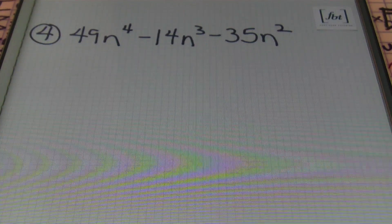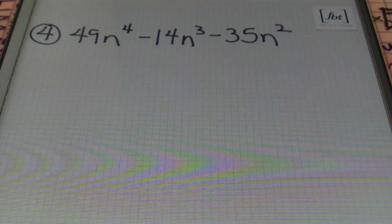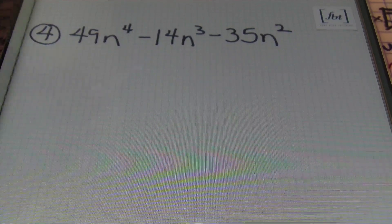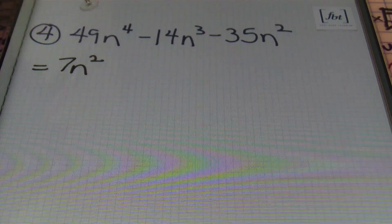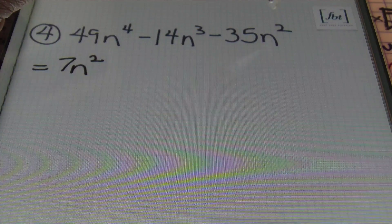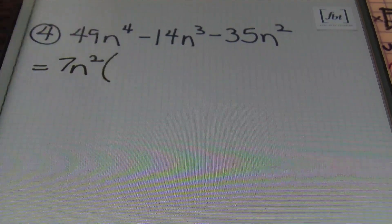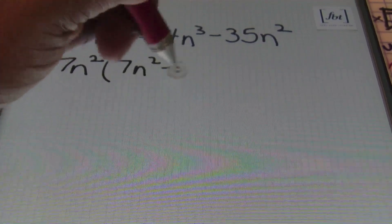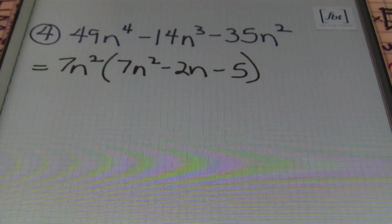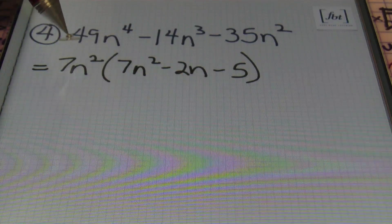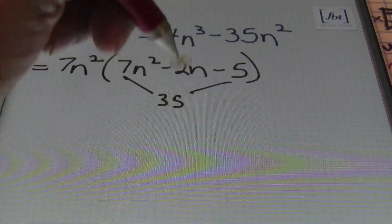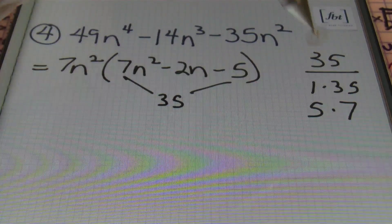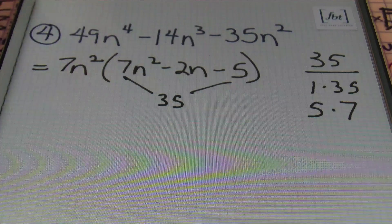Problem number four: 49n⁴ − 14n³ − 35n². Remember, always start by looking for your greatest common factor first. In this problem you do have one — it's 7n². All three terms can be divided by 7, and the smallest exponent on the common variable n is 2. Factoring out 7n² leaves us with 7n² − 2n − 5. Now 7 × 5 = 35, and the factors of 35 are 1 × 35 and 5 × 7. I'm looking for two factors of 35 that subtract to give me 2, which would be 7 and 5.